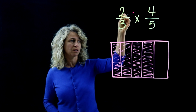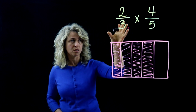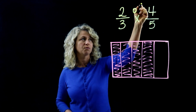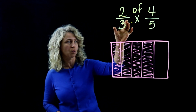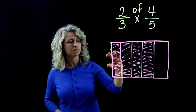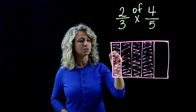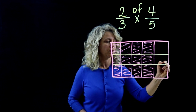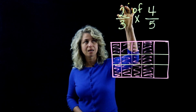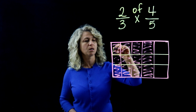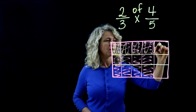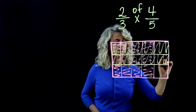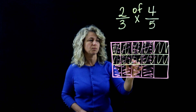The second part of the model uses the first number, which is two-thirds. I'm actually showing two-thirds of four-fifths. I'll look at the denominator three and separate the rectangle into three equal sections — one, two, and three equal parts — and then shade in two of the thirds.